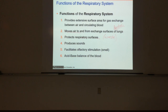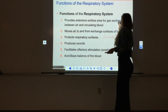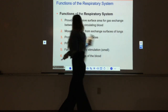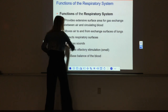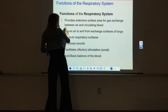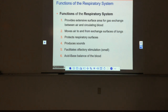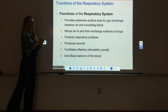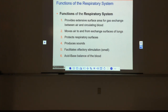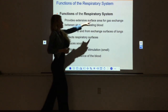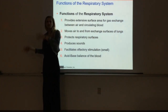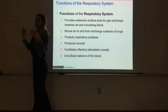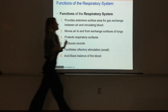The respiratory system has a couple of more minor functions beyond getting oxygen and getting rid of CO2. Looking at all the functions, one is that it provides all of the surface area necessary for gas exchange - the exchange of oxygen and CO2 - to occur. That utilizes a lot of surface area.